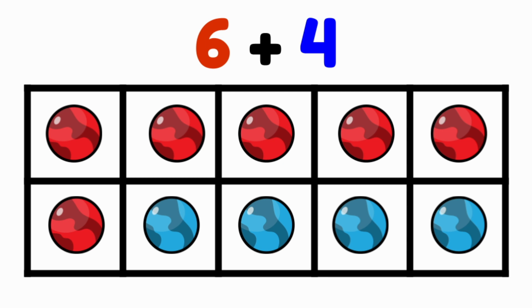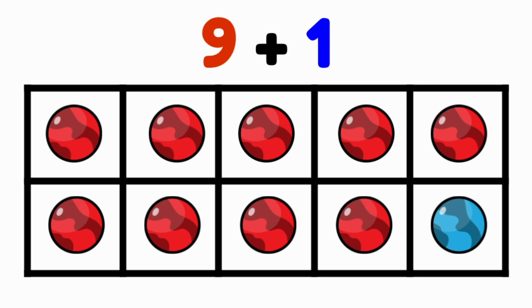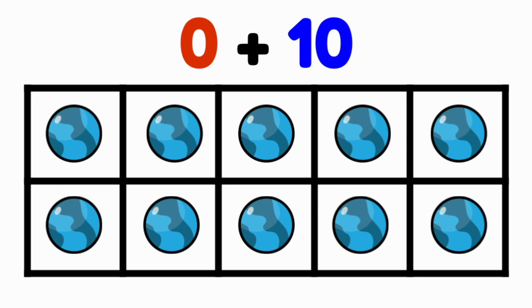6 and 4 are friends of 10. 7 and 3 are friends of 10. 8 and 2 are friends of 10. 9 and 1 are friends of 10. If I have no red marbles and 10 blue marbles, I still have 10. 0 and 10 are friends of 10.